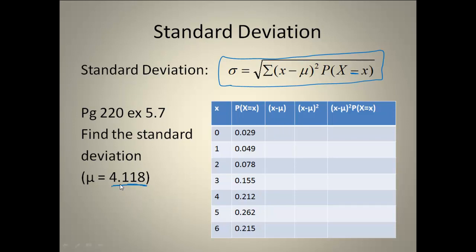We just found what μ was. So we have 4.118. We're going to take each of these X values and we're going to minus μ. For this first one, I would have 0 minus 4.118, so negative 4.118. And then I'm going to take 1 minus 4.118, so I'll end up with negative 3.118. Go ahead and fill in the rest of the column.